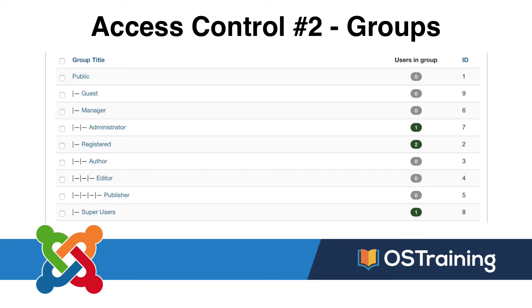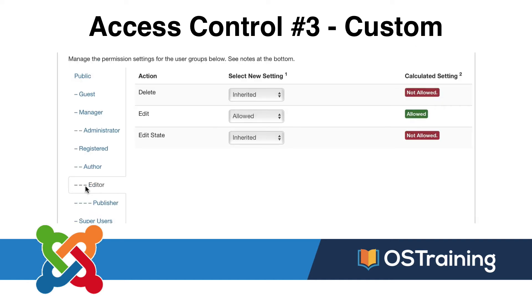Registered users are people with accounts. Special users are site administrators, and then of course super users. This is all controlled through user groups. Public is at the top, super users at the bottom, and each indentation indicates a grouping where permissions get inherited. Under registered users we have author, editor, and publisher — each has more permissions than the previous but inherits all permissions above it. An administrator has more permissions than a manager, and a manager has way more permissions than a guest. Finally, super user has every permission. These are the ones that come with Joomla, but you can add your own.